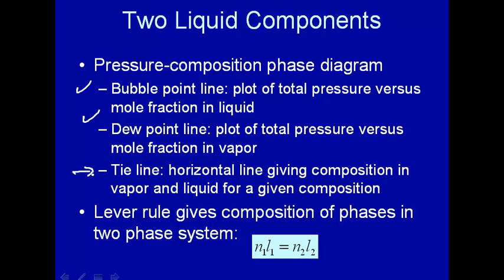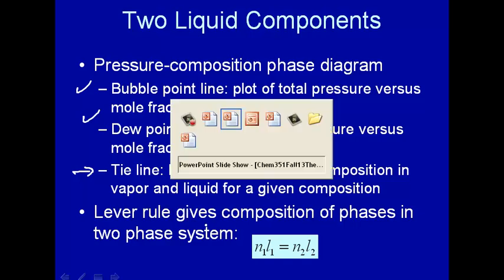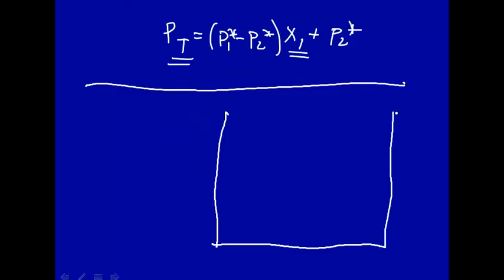What about tie lines? It's a horizontal line giving the composition of the vapor and liquid for a given composition. The lever rule is related to tie lines. Bubble point, dew point.